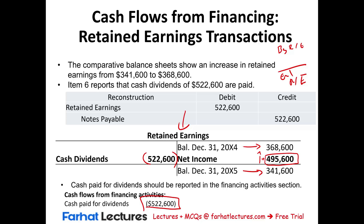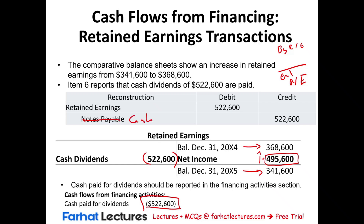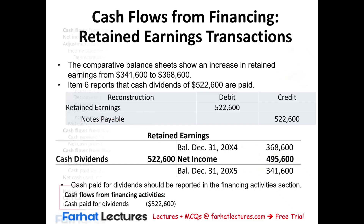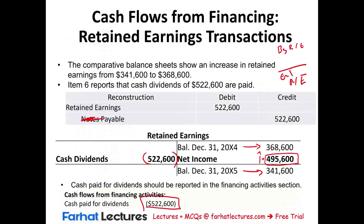To record the dividend: debit retained earnings and credit dividend payable to create a liability. Then when you pay it, debit dividend payable and credit cash. Or if paid immediately, debit retained earnings and credit cash. The proper sequence is: first declare — debit retained earnings, credit dividend payable — then when paid, debit dividend payable and credit cash.